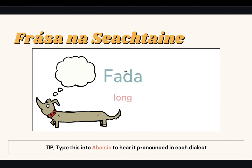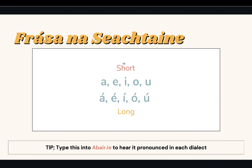On we go. So we call it a fada in Irish, and fada actually means 'long.' So basically we're saying this is going to make our vowels long. The full name for it is actually Síneadh Fada but we call it fada for short. This is our accent in the Irish language that we put over vowels. So in Irish we have our vowels A, E, I, O, and U without a fada — these are called short vowels. And then we have each of our vowels with a fada: á, é, í, ó, and ú — these are our long vowels.